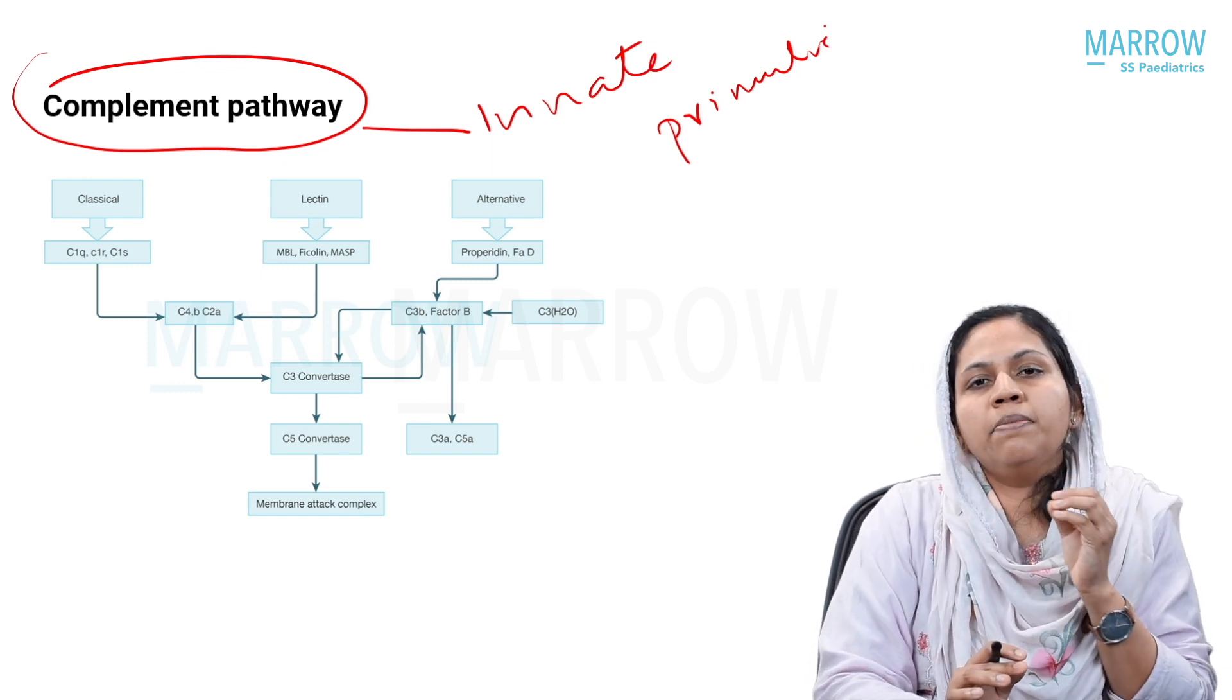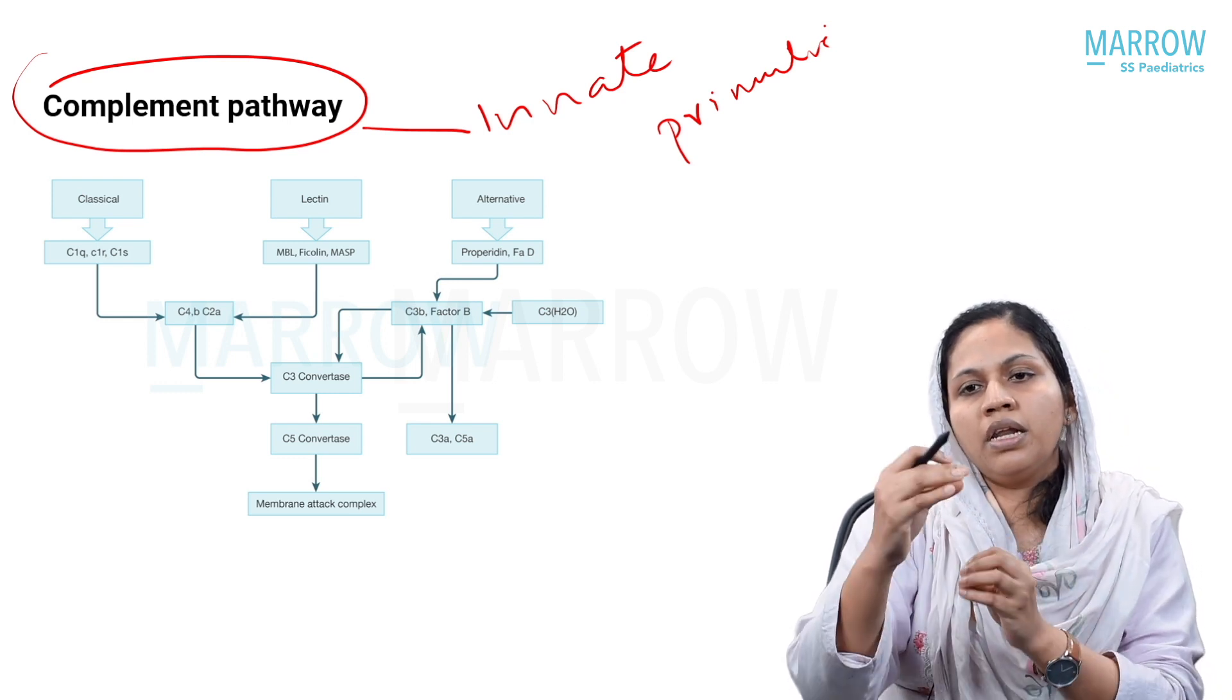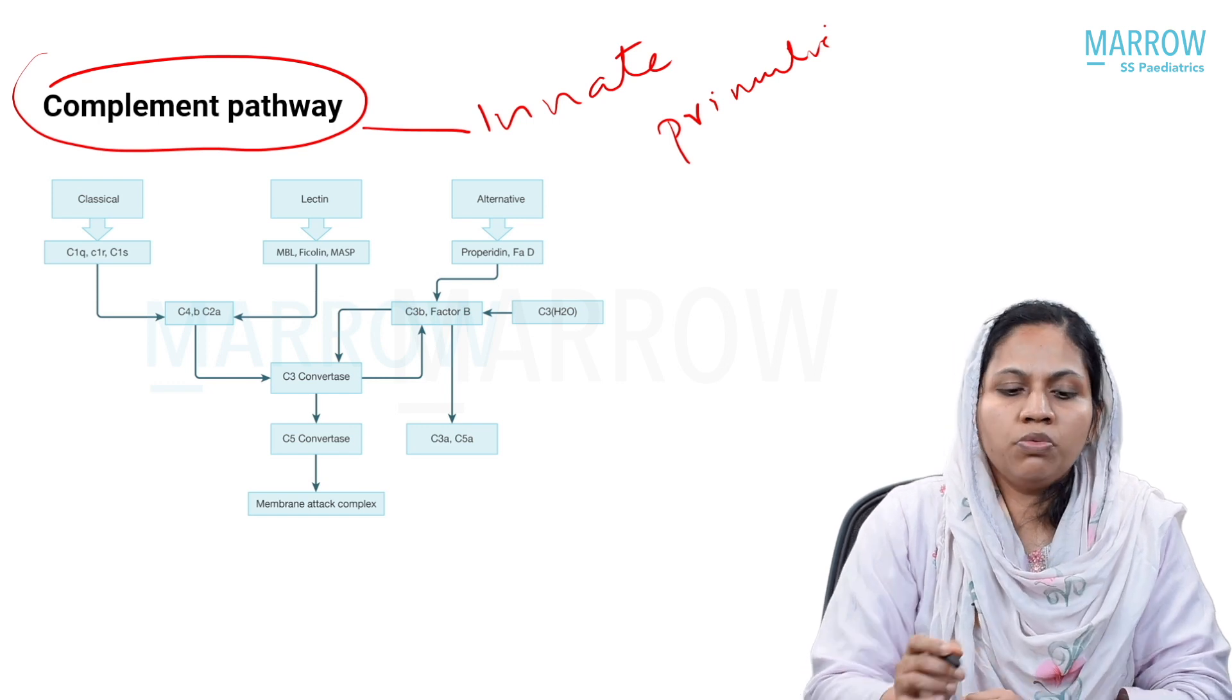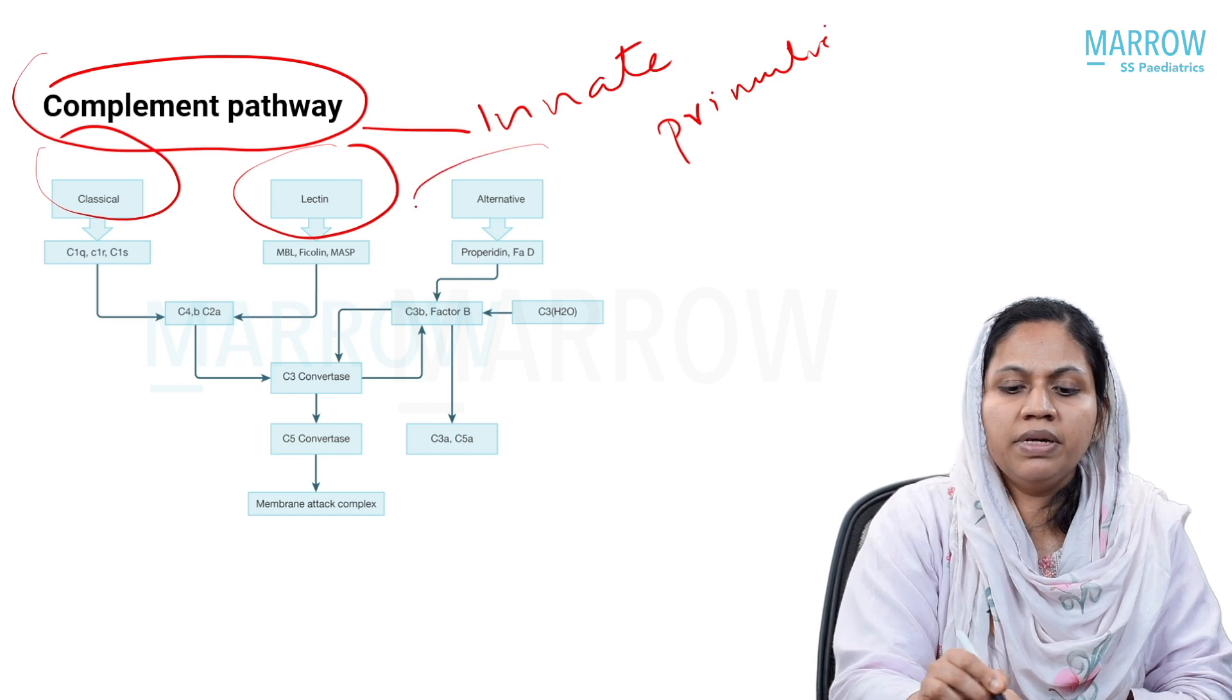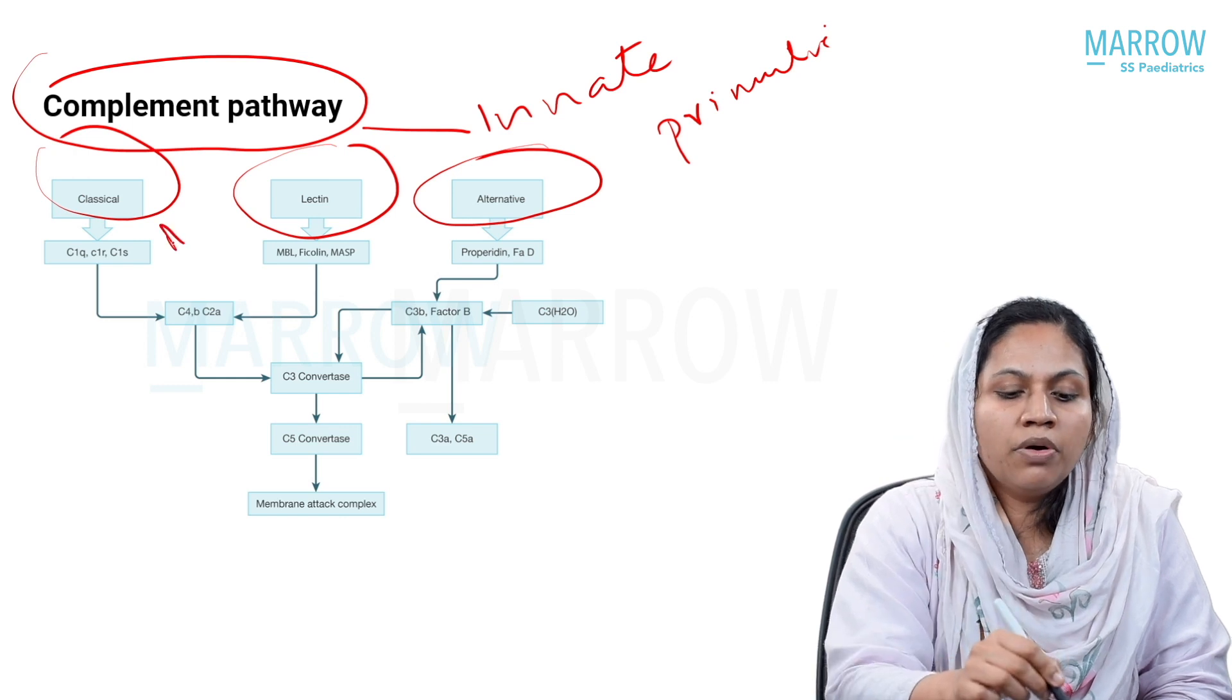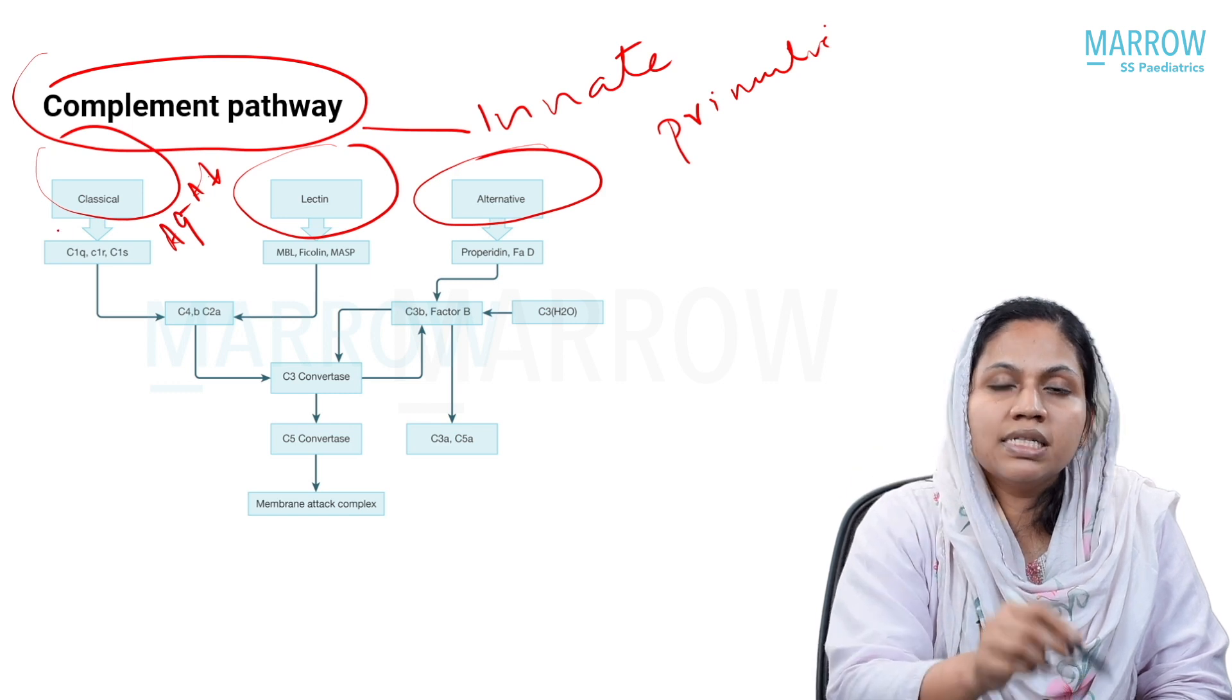Innate immunity is a primitive immunity. This pathway is somewhat similar to our coagulation pathway where one step of activation leads to another step and an amplification loop is created. To keep it very simple, we have basically three complement pathways: first being a classical pathway, second being lectin, and third being an alternative pathway.